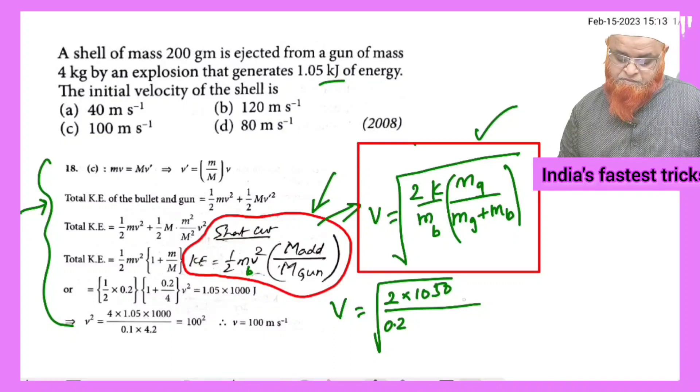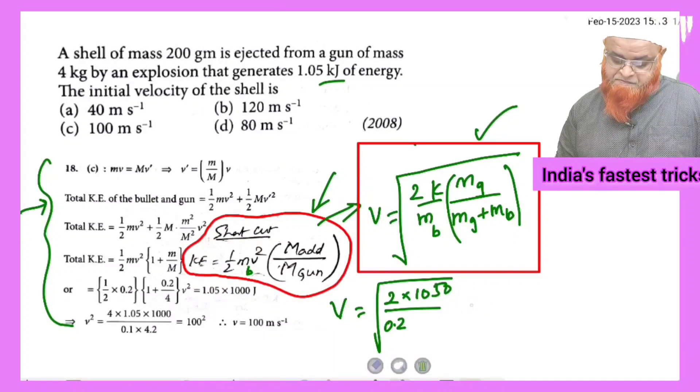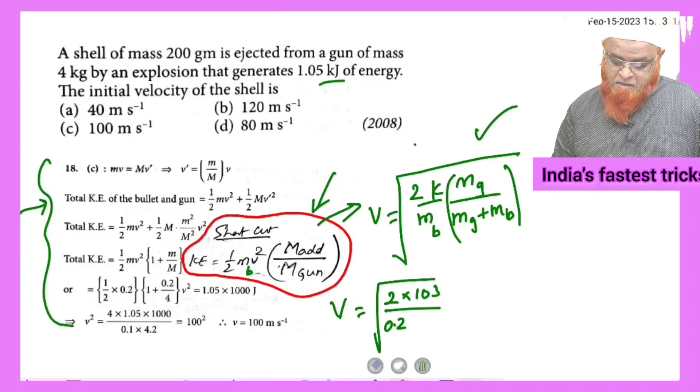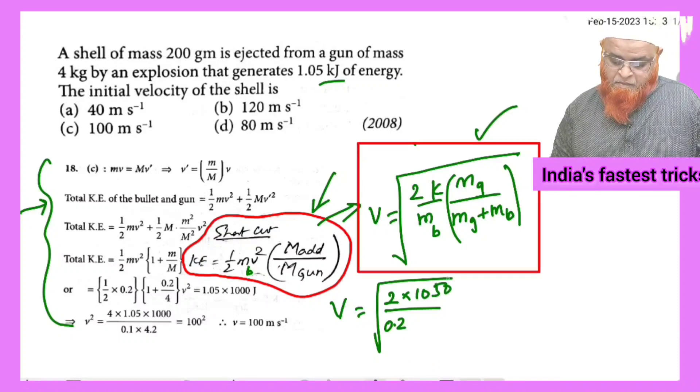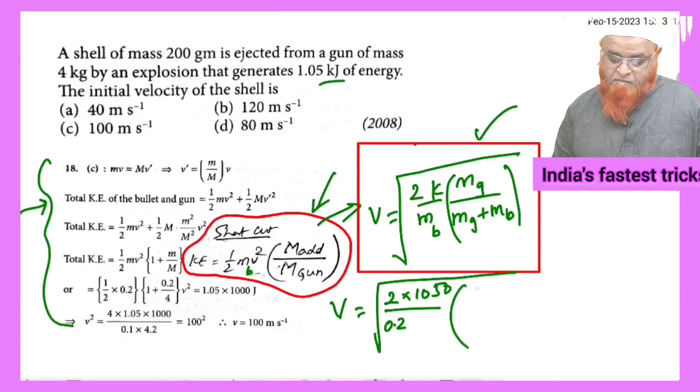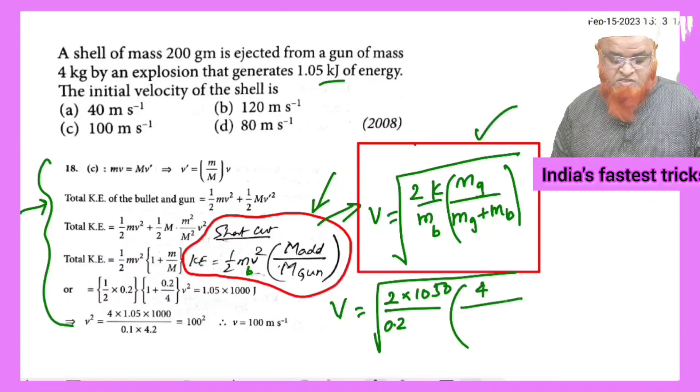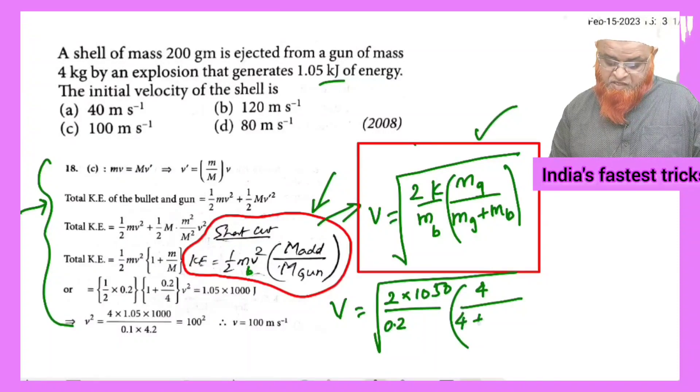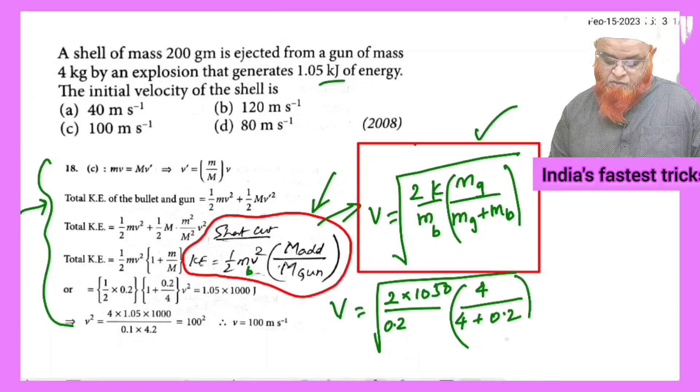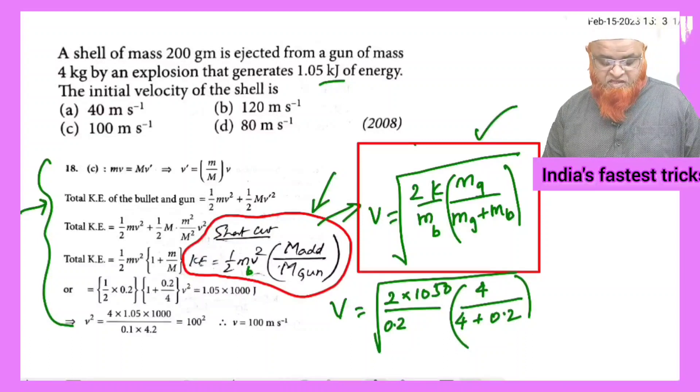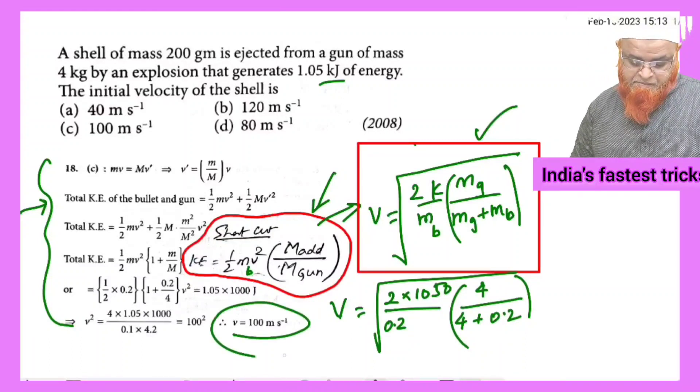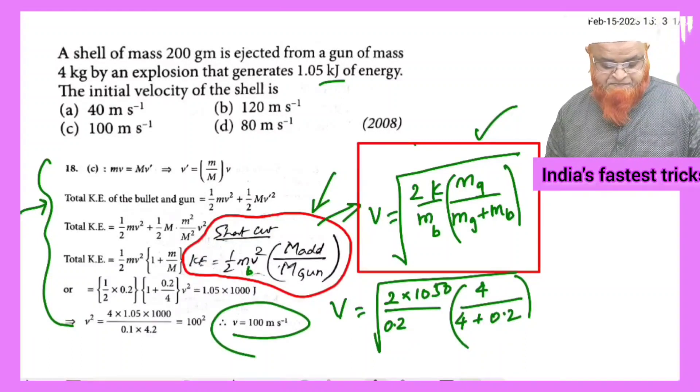This extends here, and mass of the gun which is 4 kg divided by mass of the gun 4 kg plus 0.2. If you just simplify this, finally we will be getting the answer as 100 meters per second.